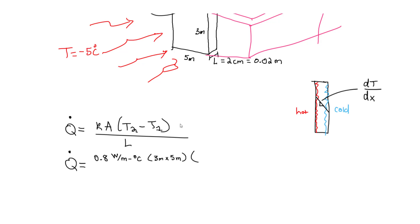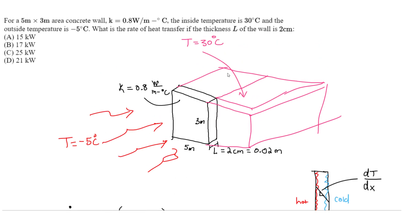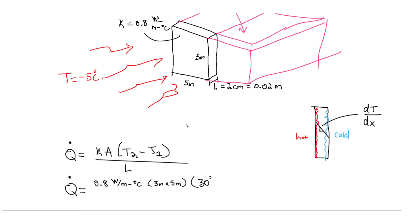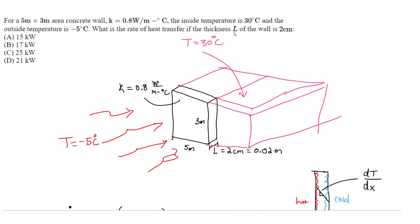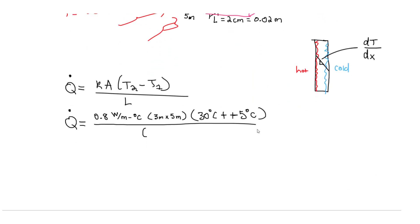And the change in temperature is going to be the 30 degrees Celsius minus the negative 5. So we do 30 degrees Celsius, the inside temperature, minus minus 5 degrees Celsius. Negative and negative is going to be a positive, so we're going to add those. All of that is divided by the length, our L value, which is the thickness. So 0.02 meters.